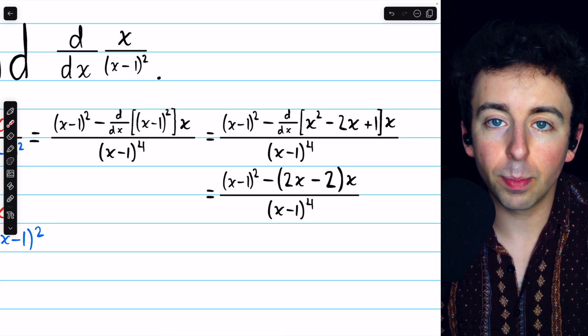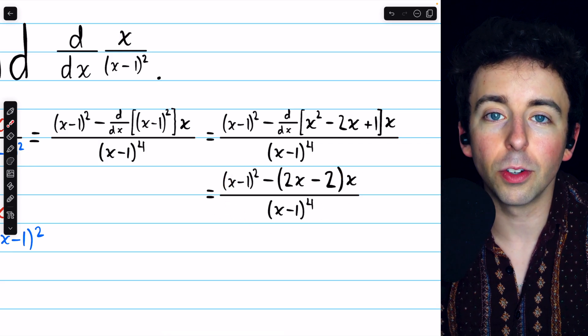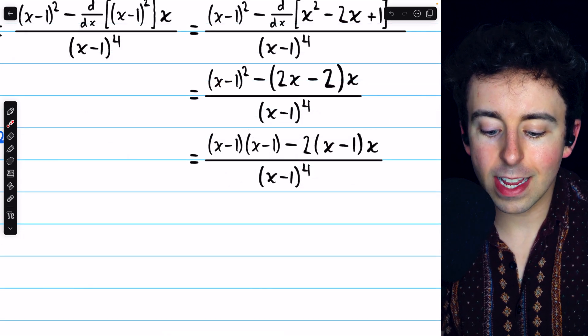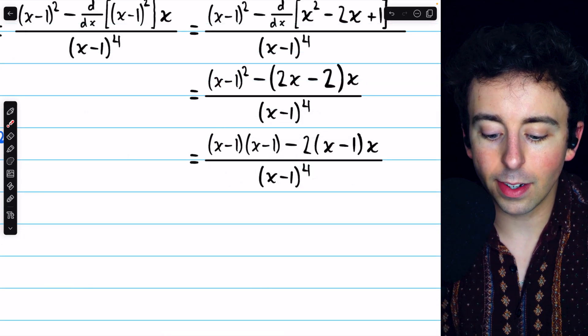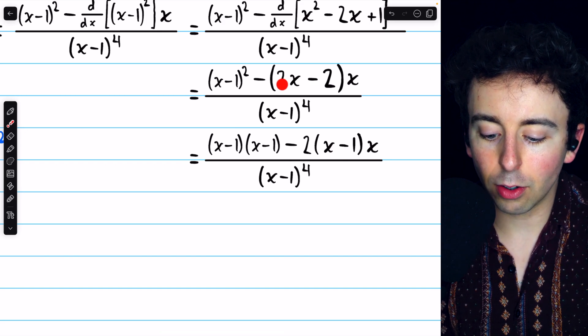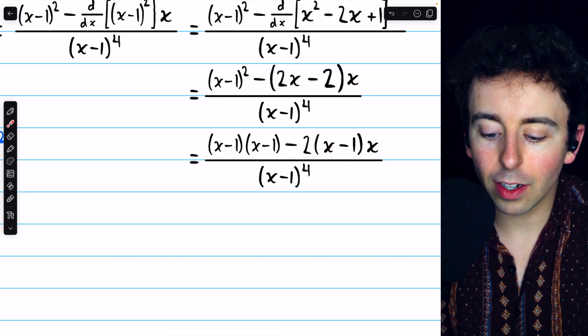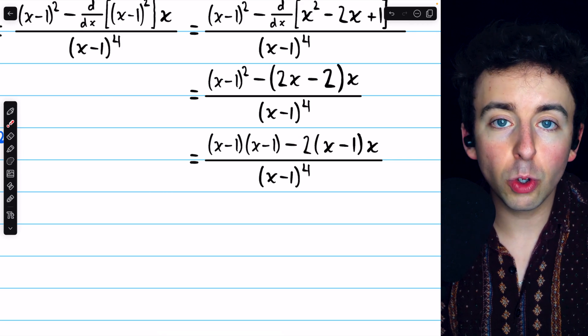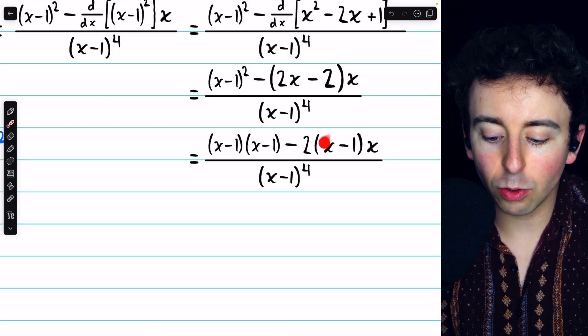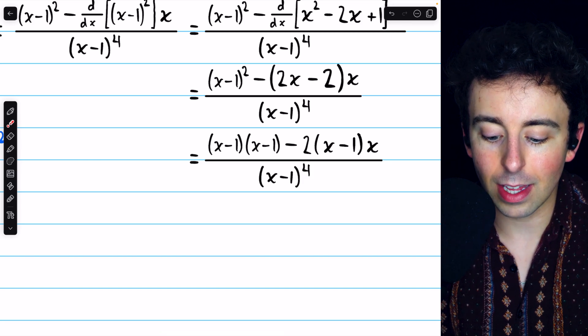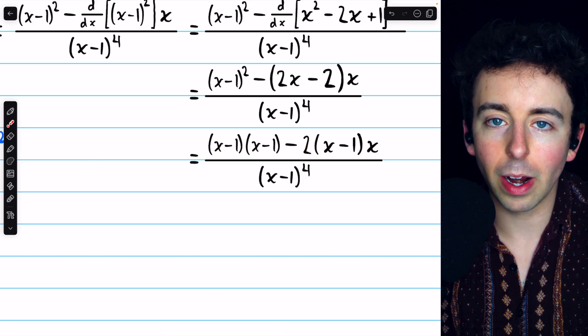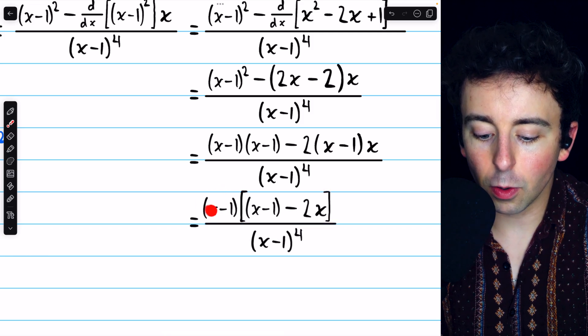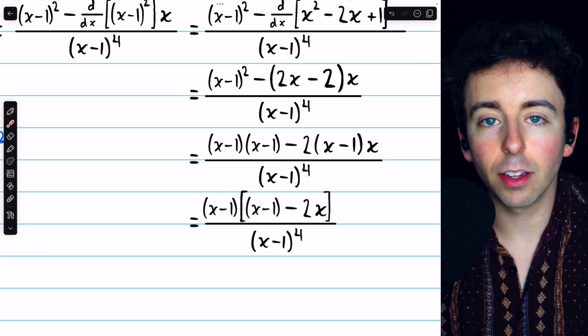This is our derivative, but there is still more work we can do to simplify. For starters, x minus 1 squared is the same as x minus 1 times x minus 1. And with this term on the right, we could factor a 2 out of these parentheses. Taking that 2 out leaves x minus 1 in the parentheses. Now you see that both of these terms in the numerator have a factor of x minus 1. So we can factor that factor of x minus 1 out.